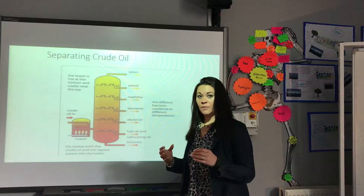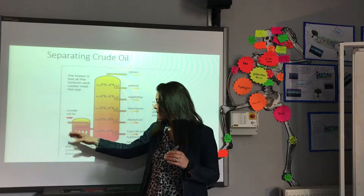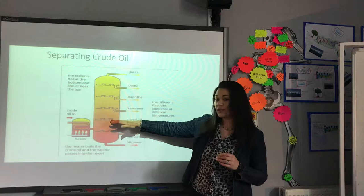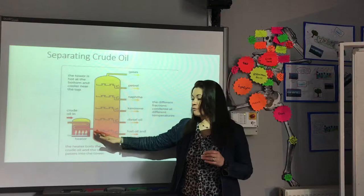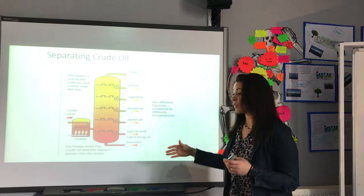So crude oil needs to be separated into the different sections or fractions. It is vaporized and heated to a high temperature and pumped into the fractional distillation tower. Depending on the boiling point of the different fractions, it will condense. At the bottom we have the residue, which is used as bitumen. Bitumen is used for road surfaces.